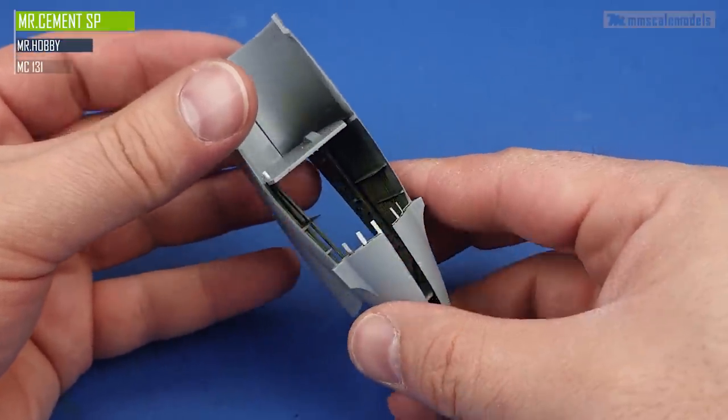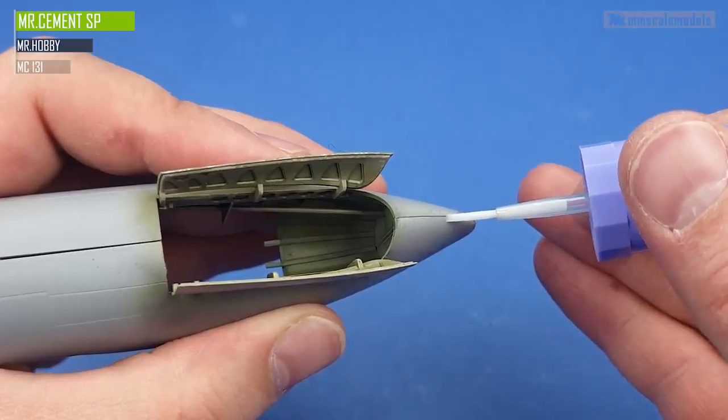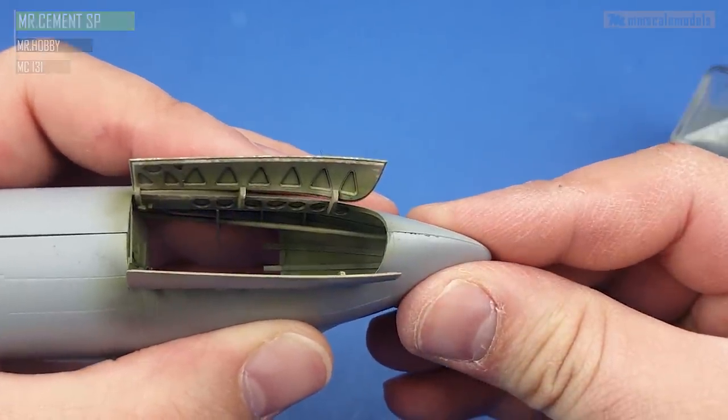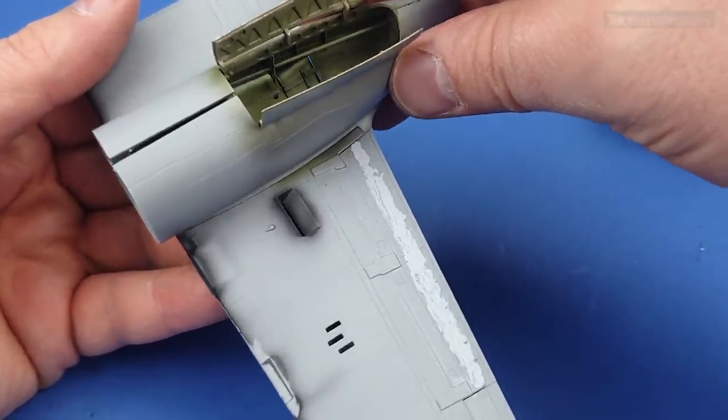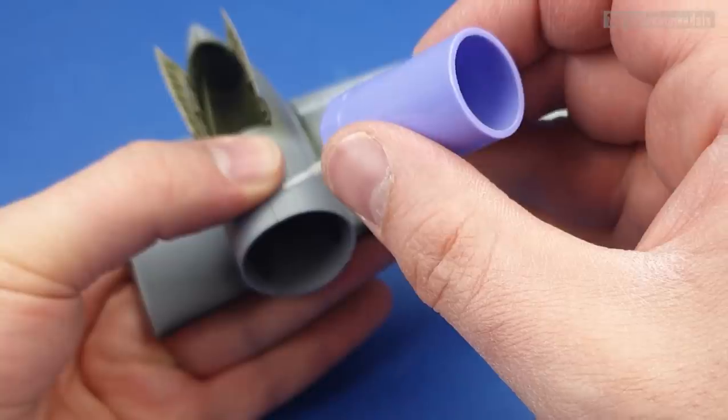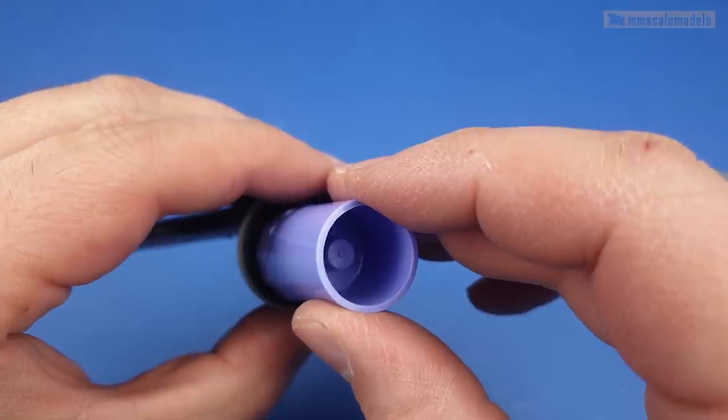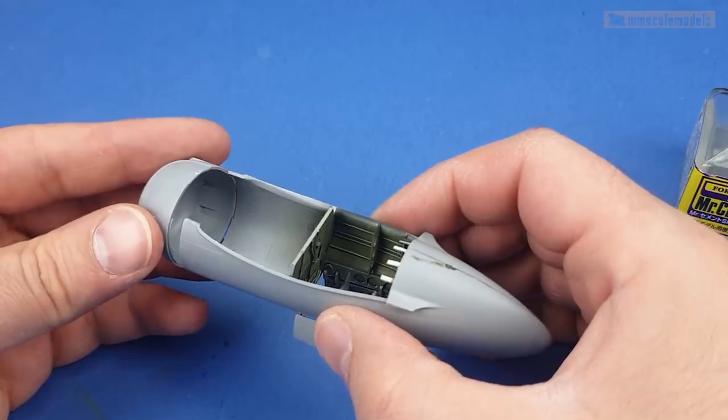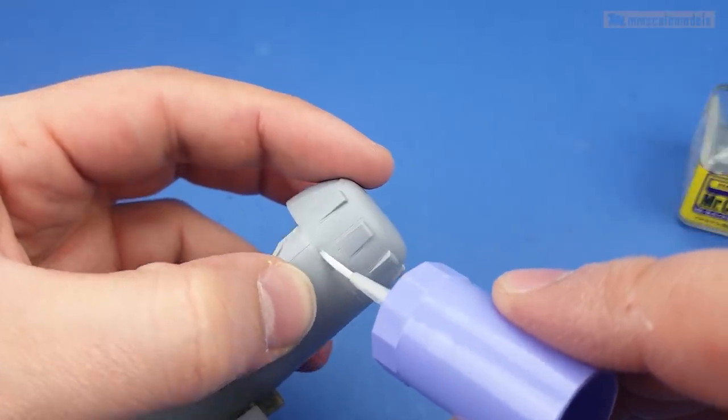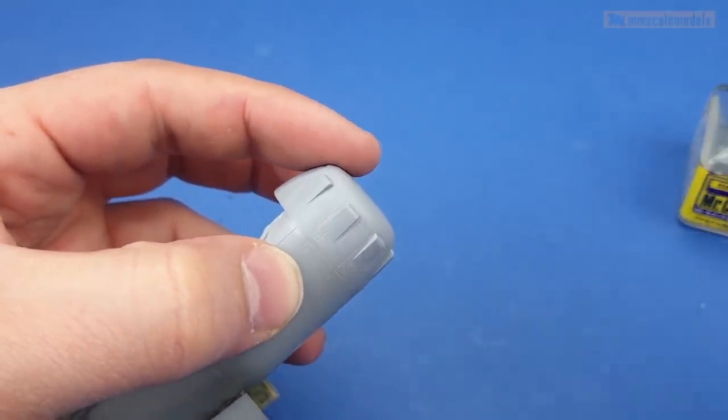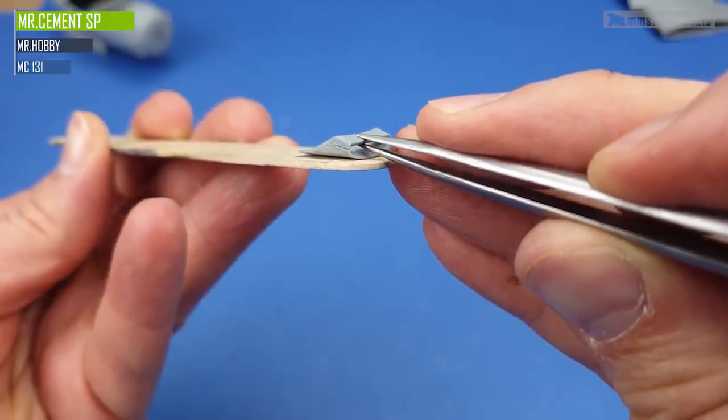Assembling the gear bay also requires some attention, mainly because of the additional details. At this point I only glued the rear portion. The front I left free because later I used the wing as a jig to glue the forward part of the gear bay nacelle combo. This allowed me to have better control over the joint between the wing and the nacelle. When gluing the front end of the nacelle I was paying attention to the joint to avoid unnecessary steps.